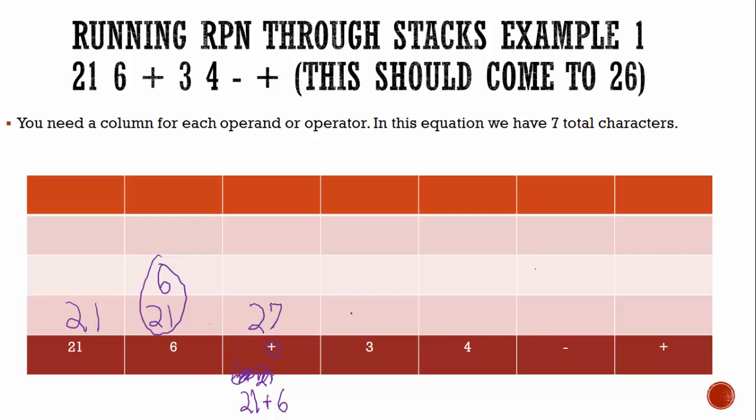Here we have three, an operand. We update the stack. Now remember, my stack had 27 already from the last one. So we're going to push three. Then we come to another operand, four. My last stack or the previous stack before it was updated was 27, 3. Because we have an operand, we push that to the stack.